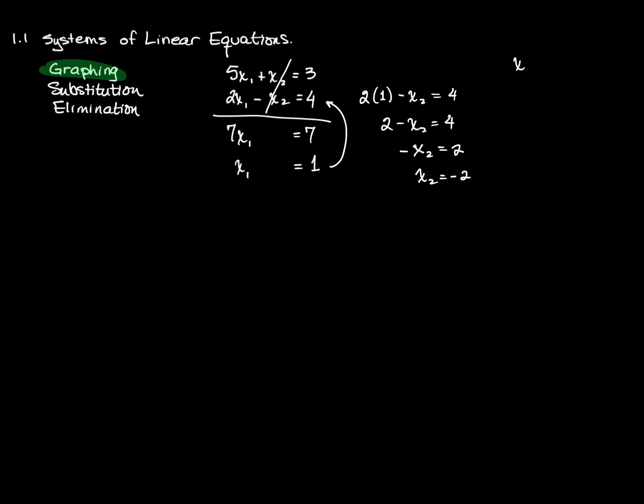So I have the pair of numbers x and y equals 1 and negative 2, which I can choose to write in a coordinate pair format. And this sort of begs the question, why do we write it that way?